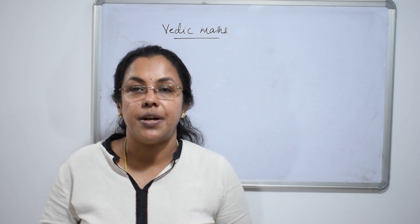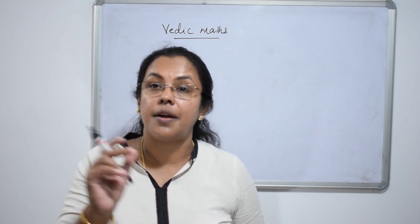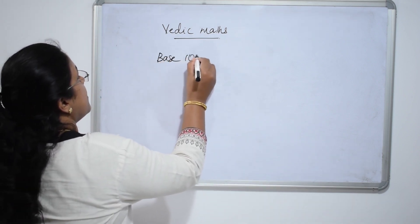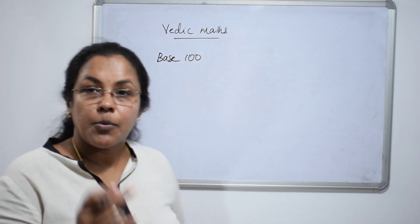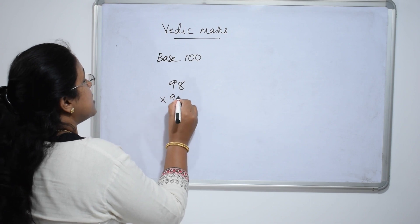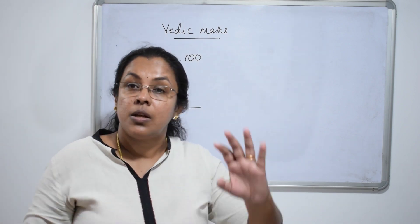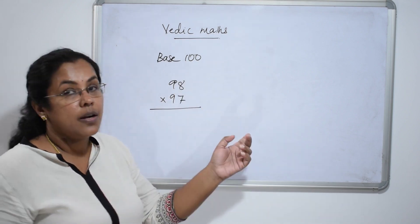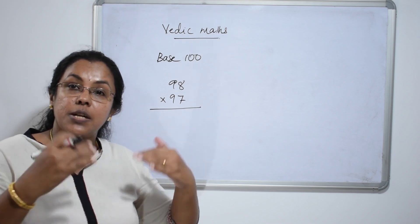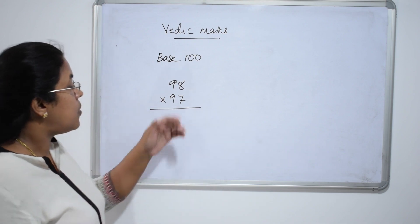For numbers near to 100, one more method is easier than this — that is the base 100 method. This method is applicable only when both numbers are less than 100, or both numbers are greater than 100.